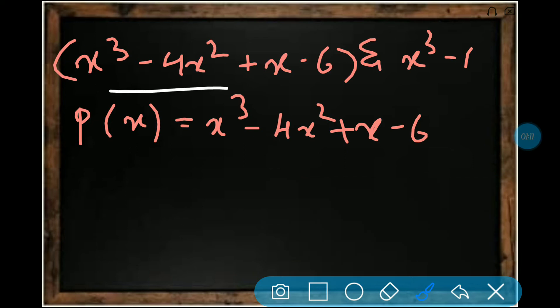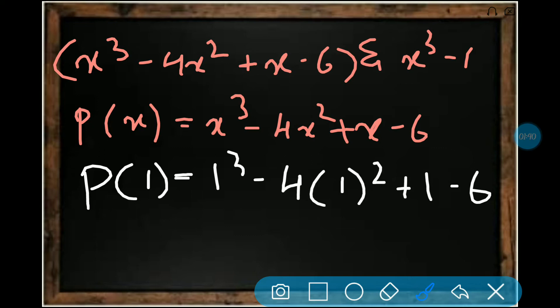This is the given data. We will consider p(x) as the first one. We have to do the trial and error method as I've already told for AM2. First let's take x as 1, p(1). Then it will be 1³ - 4(1)² + 1 - 6, which is 1 - 4 + 1 - 6. When we solve this, our answer will be 0.